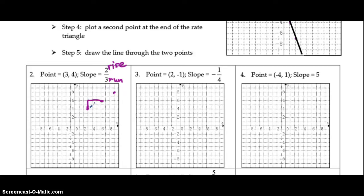If you want to reverse that, instead of going up 2, right 3, we could go down 2, left 3, plot your point, down 2, left 3, plot your point.